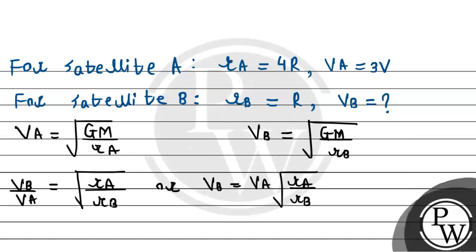Now substituting the given values to get the required answer. Velocity of satellite B equals 3V times square root of 4R divided by R. R cancels. Square root of 4 is 2, so we get 2 times 3V. Therefore, the velocity of satellite B equals 6 times V.